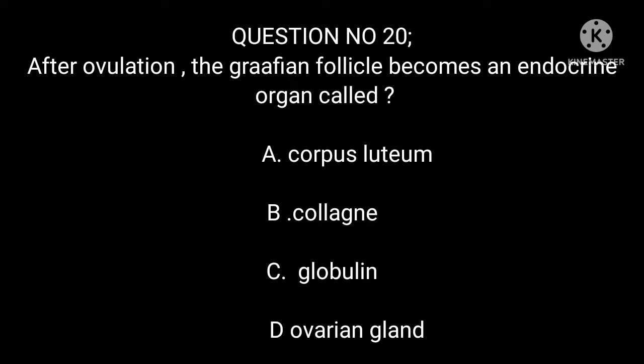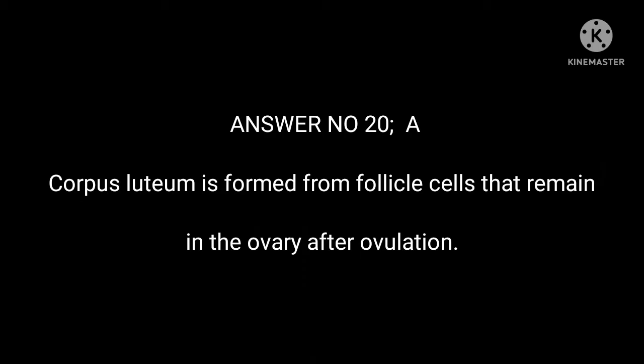Question number 20. After ovulation, the Graafian follicle becomes an endocrine organ called: A. Corpus luteum. B. Globulin. C. Ovarian gland. Answer number 20: A. The corpus luteum is formed from follicle cells that remain in the ovary after ovulation.